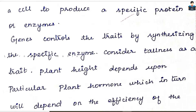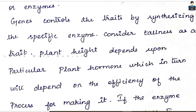If you look at the control and coordination chapters, the plant hormone is auxins. So plant height depends on the hormone, and the hormone depends on the efficiency of the process of making it. Plant hormones depend on the efficiency of the enzyme-making process.